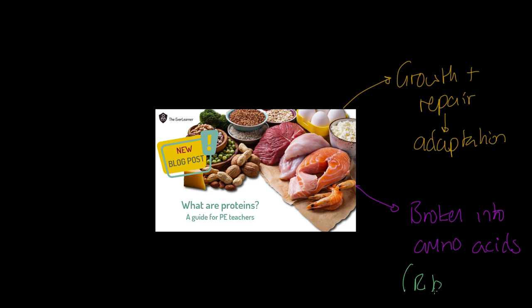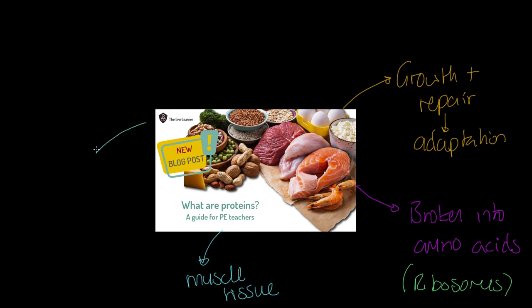Once ingested, that rebuilding process takes place at the ribosomes — you studied that in biology — and they're rebuilt into human proteins. A lovely example of that is muscle tissue: the proteins required for muscle tissue are formed that way. So we eat a piece of salmon, it contains protein, we break that protein down into amino acids, deliver them to the cell where the ribosomes form them into muscle proteins. That's exactly why this is important for us as sports scientists.